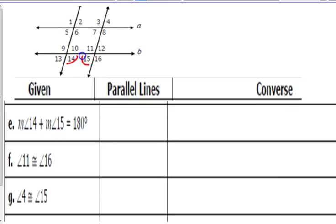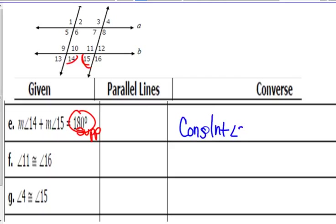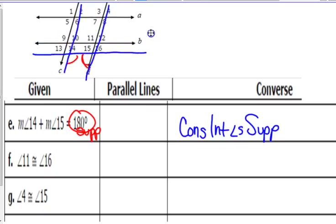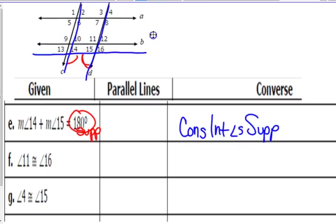Angles 14 and 15 add up to 180 — that's supplementary again. So 14 and 15 are consecutive interior angles that are supplementary. They are along line B and in between lines C and D, so C is parallel to D.